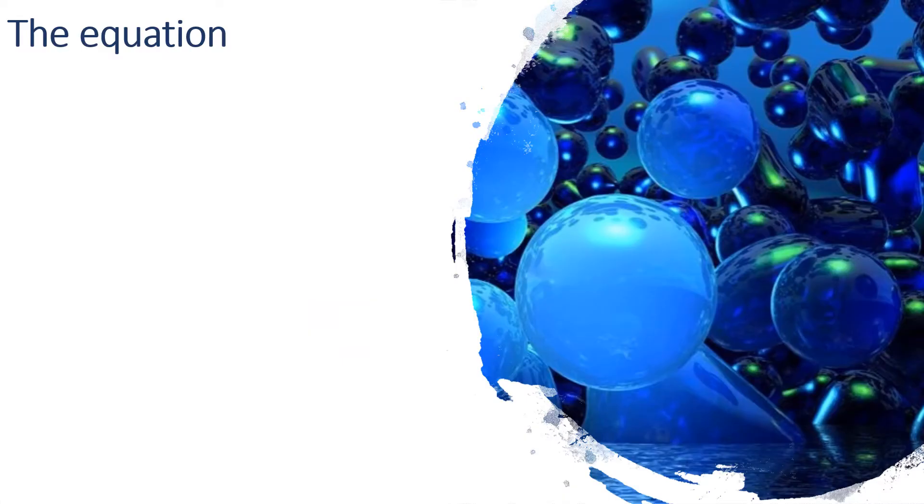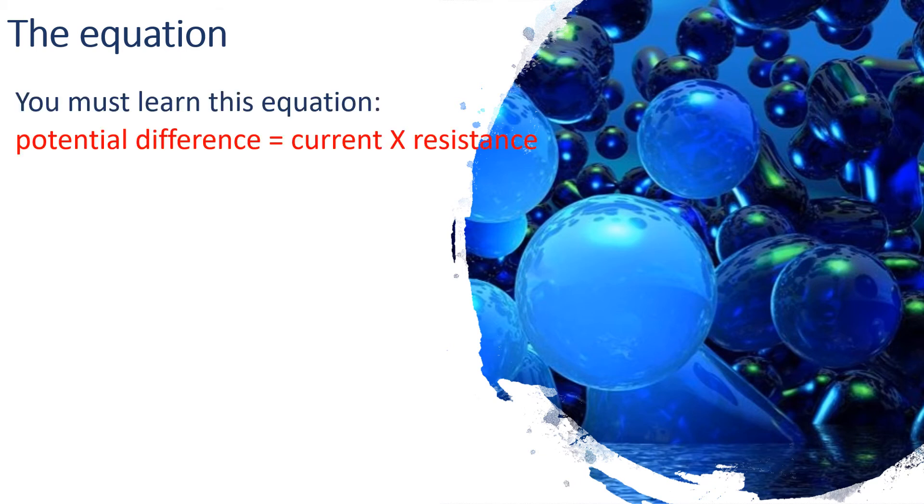And here's the equation, another one of the physics equations you need to learn. Potential difference, otherwise known as voltage, is equal to current times resistance. If you want to learn the symbols, the symbol for potential difference is V, V for voltage, and current is given the I symbol and resistance R. So it's V equals I times R.